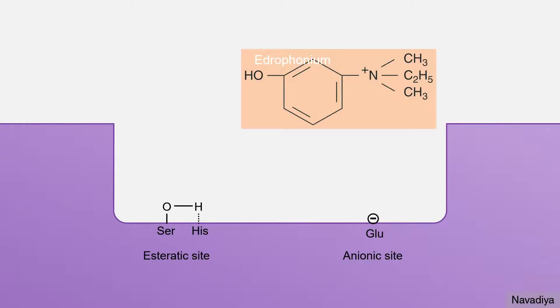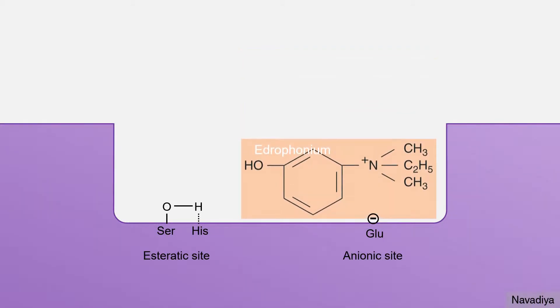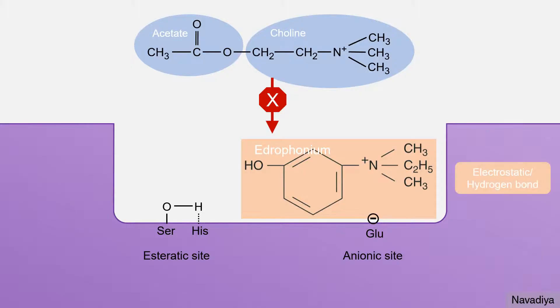Drugs with short duration of action like Edrophonium binds only with anionic site. As long as the drug is bound here, enzyme is not available for hydrolysis of acetylcholine. With this type of drugs, binding is electrostatic and by hydrogen bond which is weaker than covalent bond that we see with other drugs.